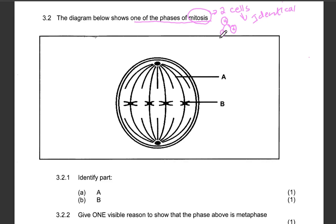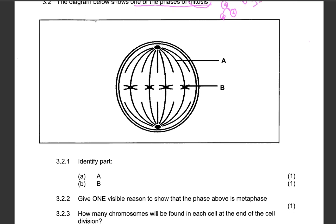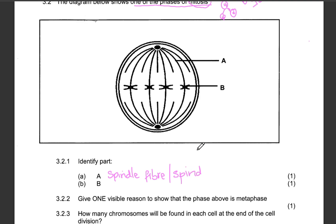We are given a diagram showing one of the phases of mitosis and we are not told which phase it is. Identify part A — these are our spindle fibers, or you can say spindle threads. It's the same thing.